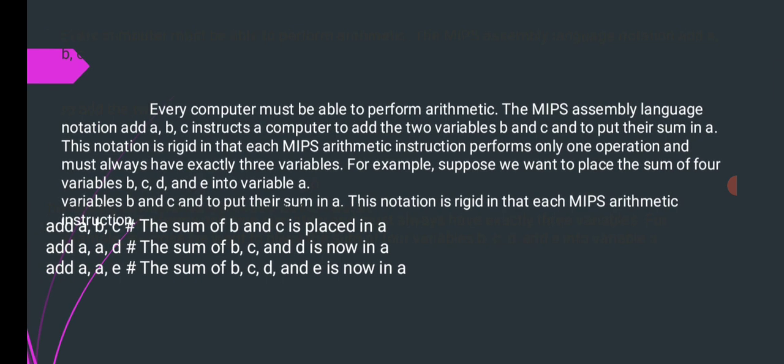A, B, C instructs a computer to add the two variables B and C and to put their sum in A. This notation is rigid in that each MIPS instruction performs only one operation and must always have exactly three variables. For example, suppose we want to place the sum of four variables B, C,